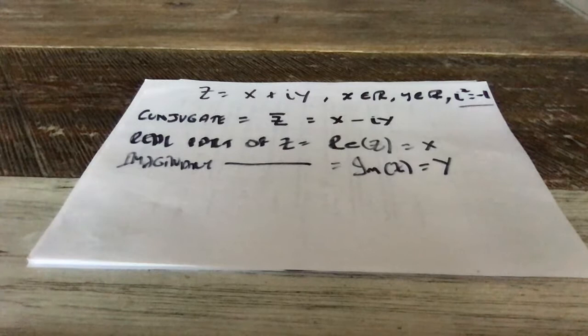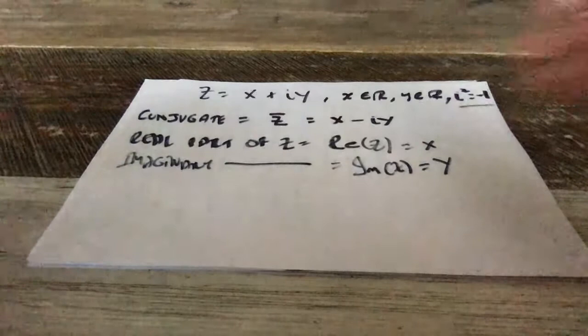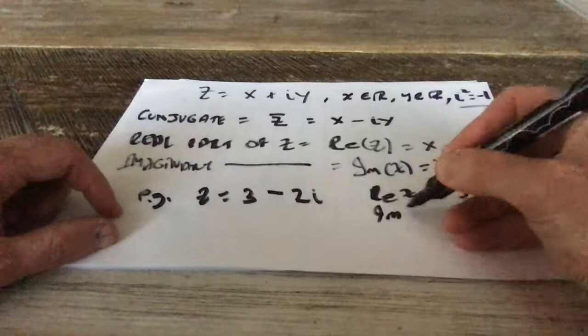It's not yi. It's the number multiplying the i. So, for example, z is equal to 3 minus 2i. The real part of z here is 3. The imaginary part of z is minus 2. And z bar is 3 plus 2i.